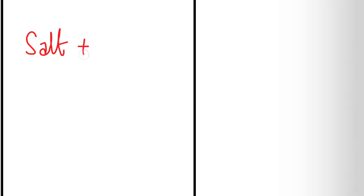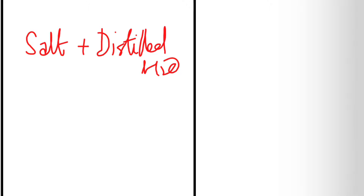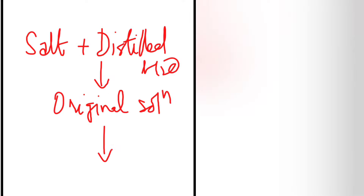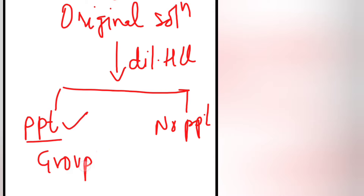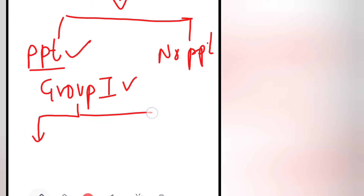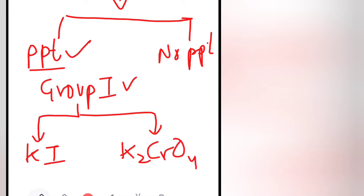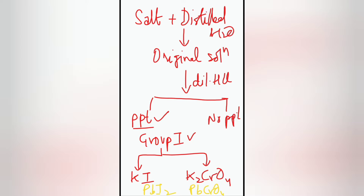So for Group 1 analysis: take the salt, add distilled water to prepare the original solution. To the original solution add dilute HCl — there will be two options: formation of a precipitate or no precipitate. If a precipitate is formed, Group 1 cation is present and we perform the confirmatory tests. To the white precipitate add potassium iodide to obtain yellow PbI₂, or add potassium chromate to obtain yellow lead chromate, PbCrO₄. These are the confirmatory tests for the Group 1 cation Pb²⁺. Learn this analysis in flowchart form to easily remember all the tests and reactions involved.